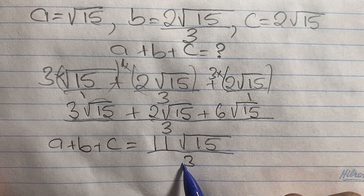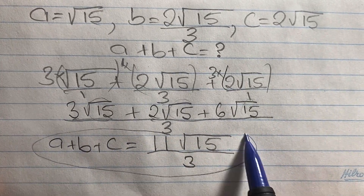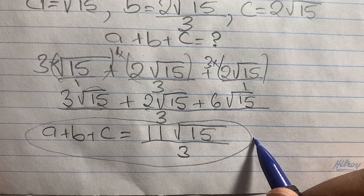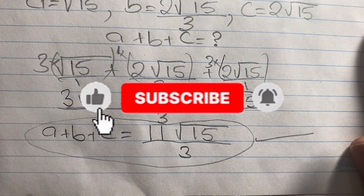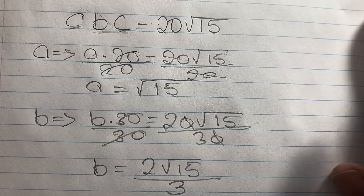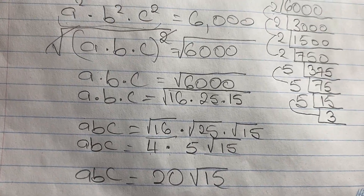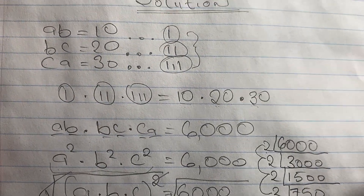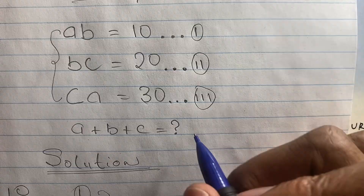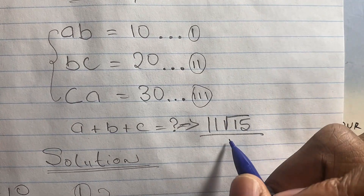So 11 root 15 over 3 is the sum of our values and our final answer for a plus b plus c. This takes us to the end of this video. I hope it was very informative. Don't forget to smash that like button, subscribe to my channel, and check out my math olympiad or complex solution playlists for more problems. Thanks for staying with me — take care, see you again soon!